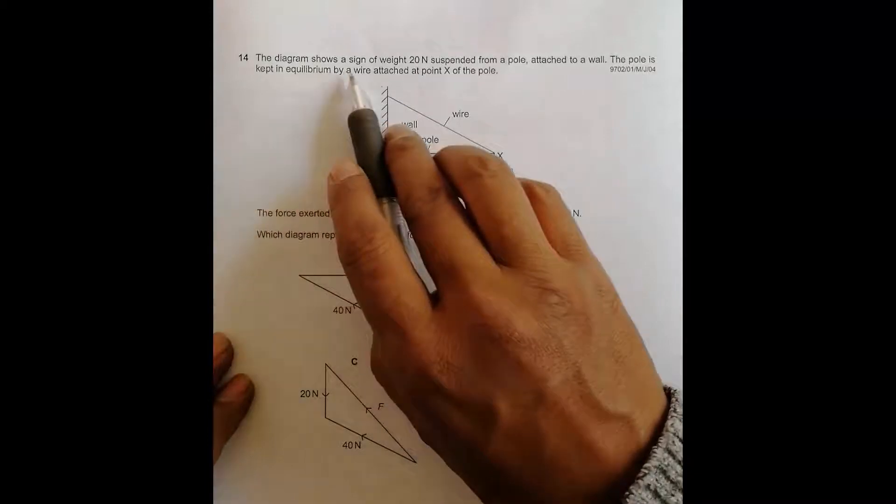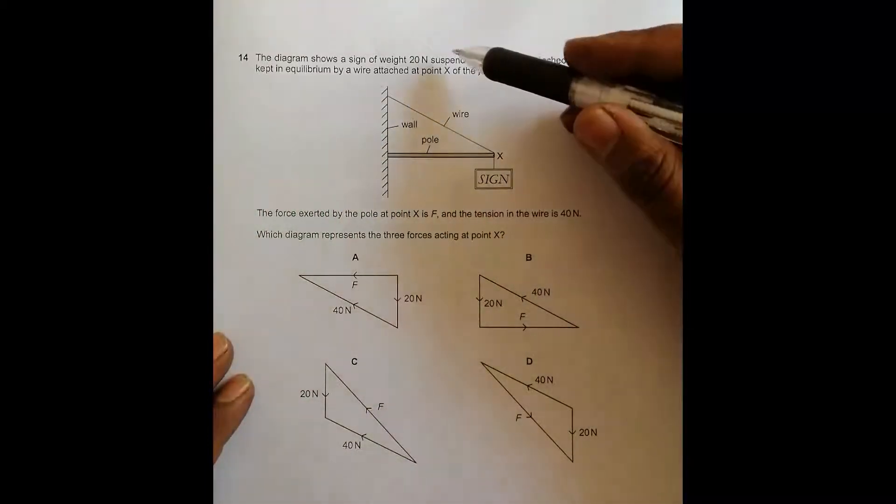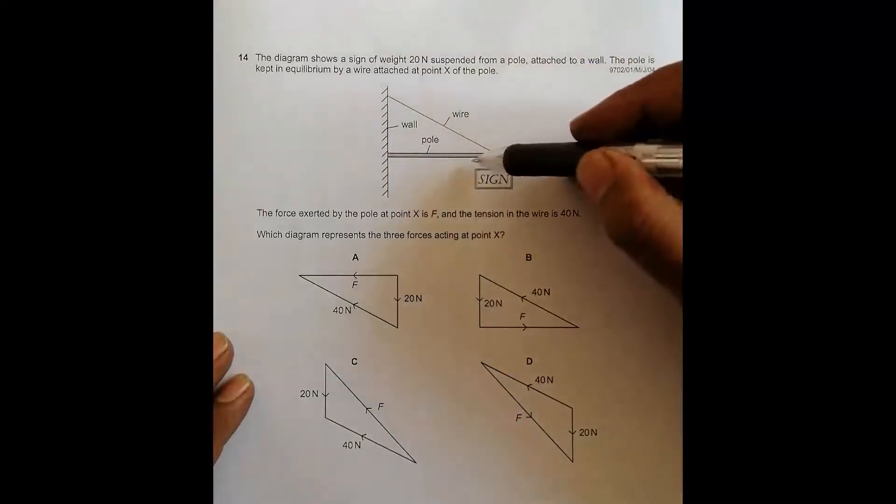The diagram shows a sign of weight 20 Newton suspended from a pole attached to a wall. So this is a pole, this is a wall here.